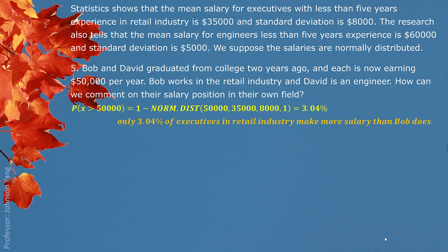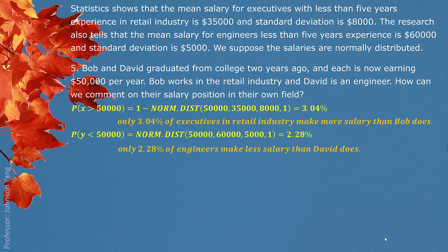Similarly for David: David makes $50,000, but for engineers the average is $60,000 with a standard deviation of $5,000, so David's salary is actually at a low level for an engineer. We want to know how low it is, so we find what percent of engineers make less than $50,000. Using the Excel function, we get 2.28%. That means only 2.28% of engineers with similar background make less salary than David does — exactly telling us how low it is. That's the kind of comment we are looking for to describe their salary situations.